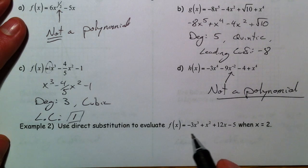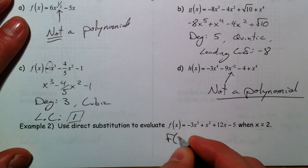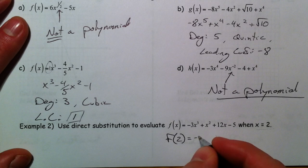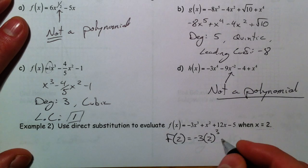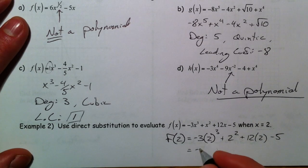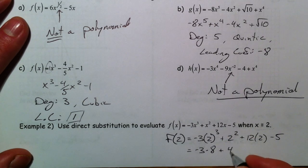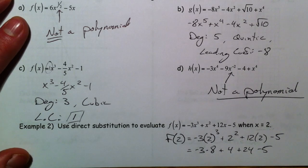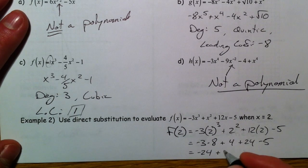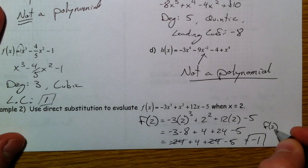Use direct substitution to evaluate. f of x equals this when x equals 2. What is the function value when x equals 2? So: negative 3 times 2 cubed, plus 2 squared, plus 12 times 2, minus 5. That's negative 3 times 8 — remember exponents before multiplication — plus 4, plus 24, minus 5. So negative 24 plus 4 plus 24 minus 5. The 24s cancel out. You get negative 1. So f of 2 is negative 1.